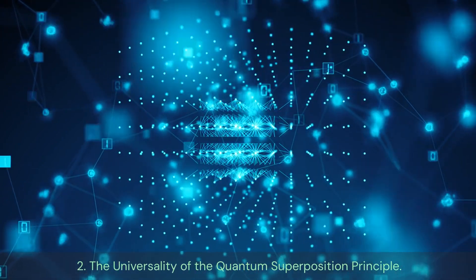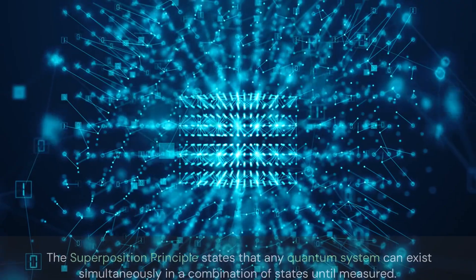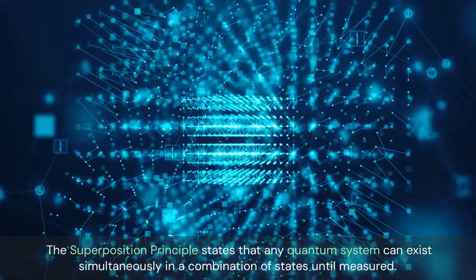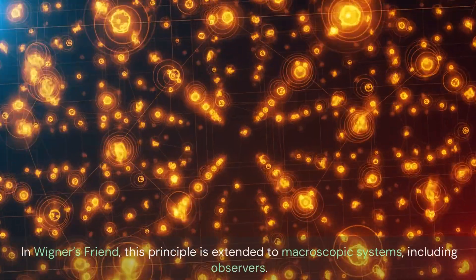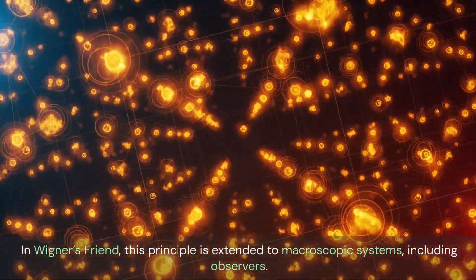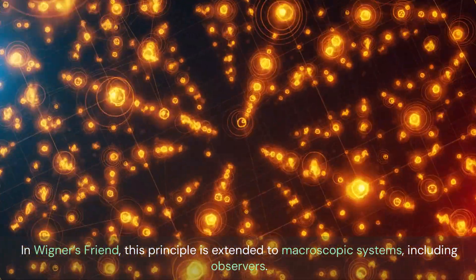The universality of the quantum superposition principle. The superposition principle states that any quantum system can exist simultaneously in a combination of states until measured. In Wigner's friend, this principle is extended to macroscopic systems, including observers.